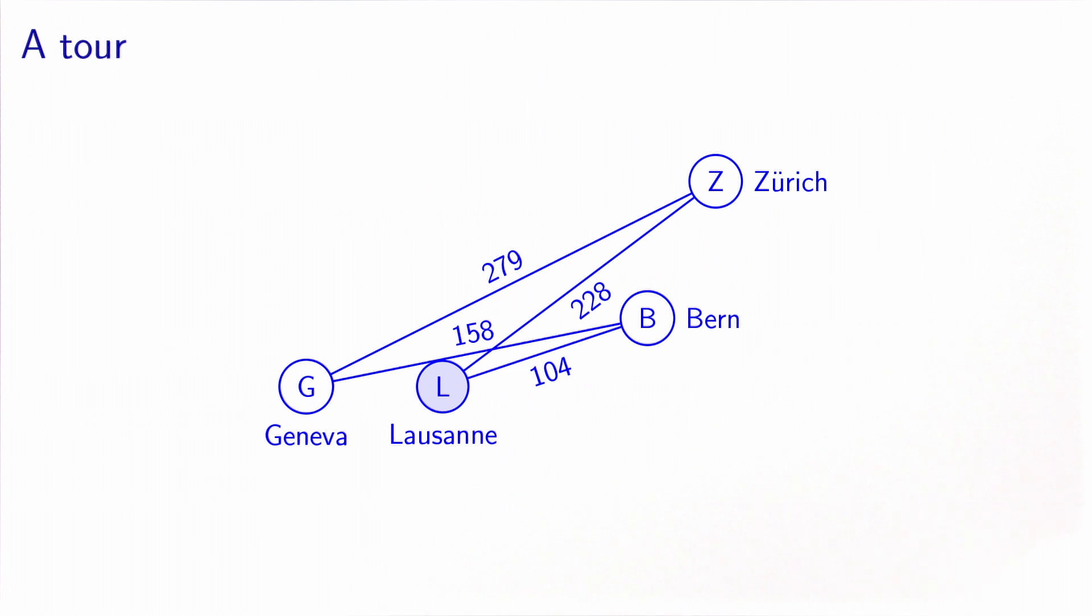Here is a feasible solution where the salesman starts from home in Lausanne, goes to Bern, then to Geneva, then to Zurich, and then back to Lausanne. Note that in this example it's symmetric, so the tour can be taken in one direction or the other. The total length of this tour is 769 kilometers. Well, I'm sure that you can find a better one, but finding the best one is not necessarily easy.